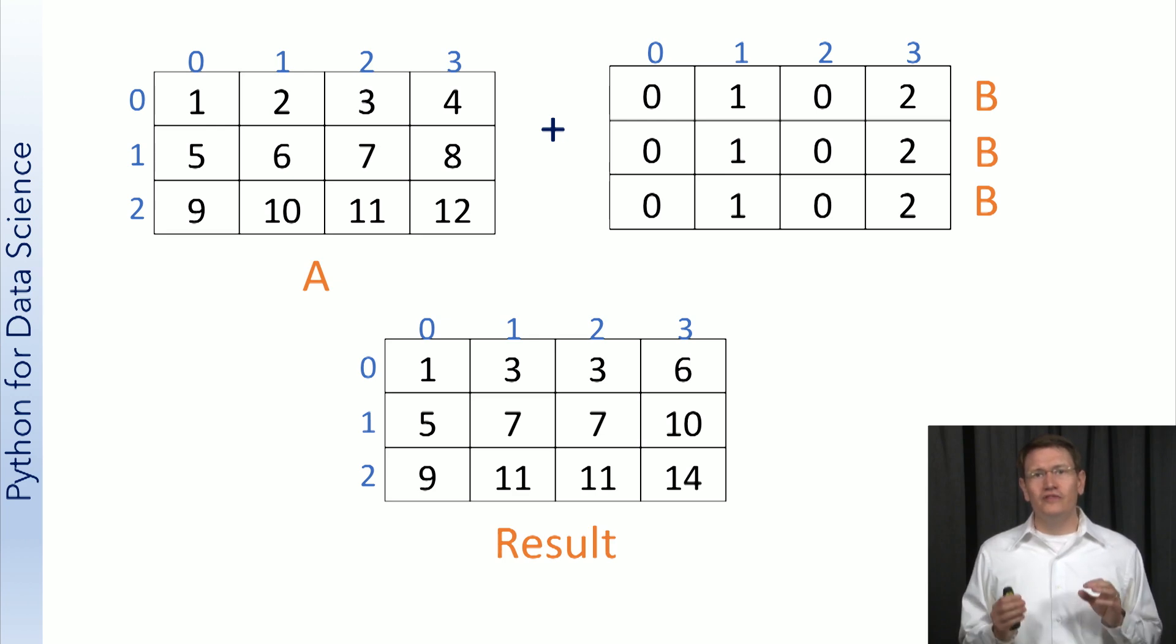I will note that this is only for illustration purposes. B actually retains its original shape, and that's part of the beauty of broadcasting. Because B retains its original shape, no copying is involved. This is actually a very memory and computationally efficient operation.